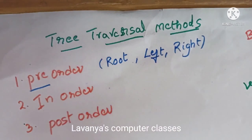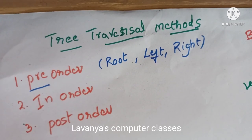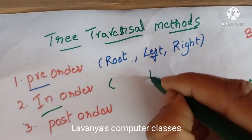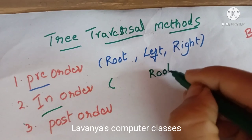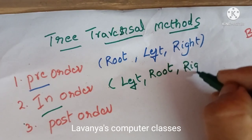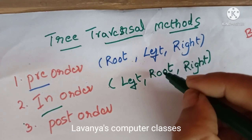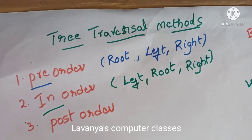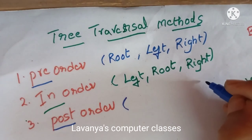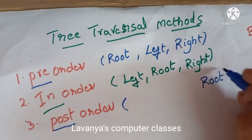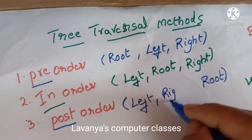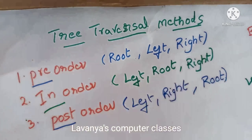For in-order, in means middle, so root is in the middle — left, then root, then right. For post-order, post means last, so root is visited last. Left and right order does not change; only the position of root changes.